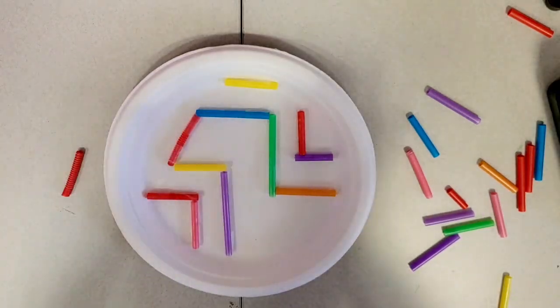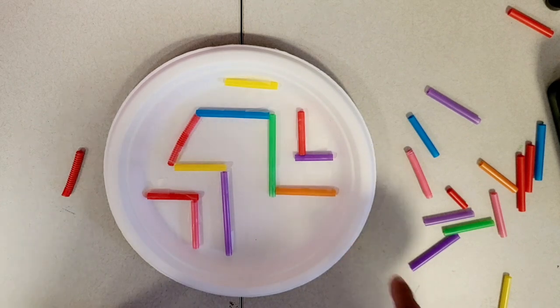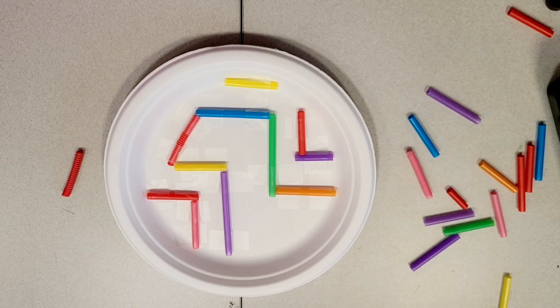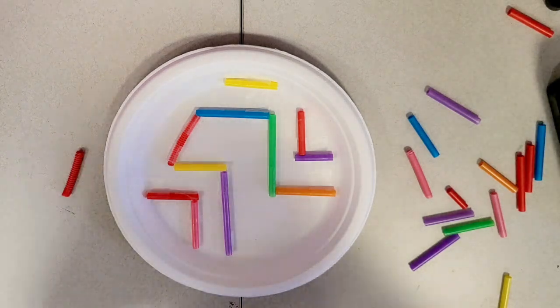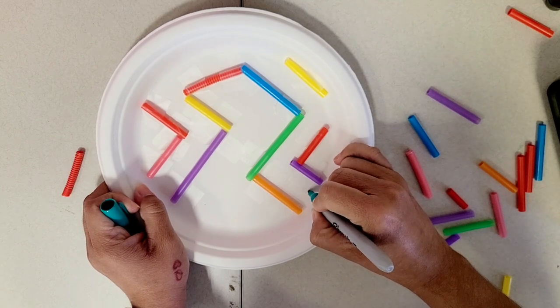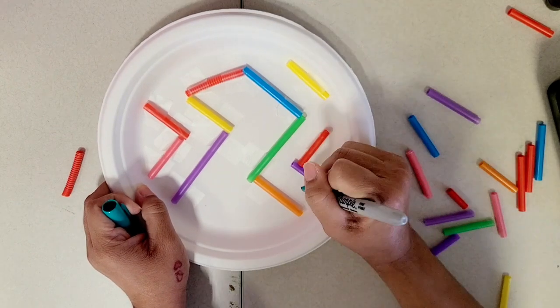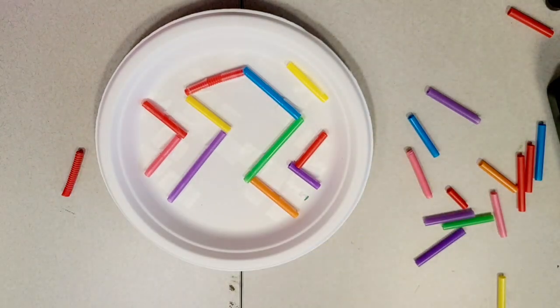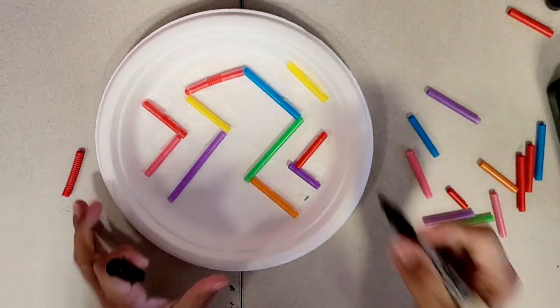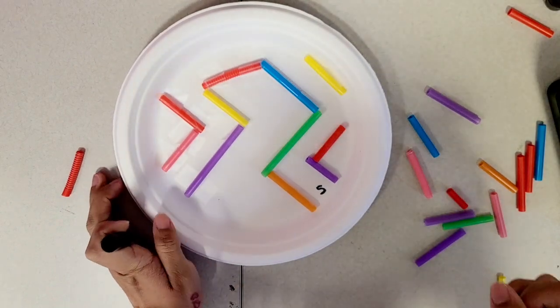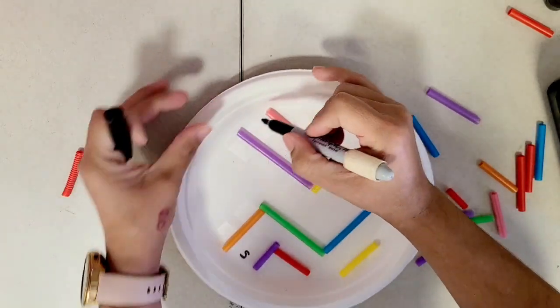Okay so I have the designated path that I want my marble to go and I'm going to label that so that I know and don't get confused later on when I add more straws to it. This is going to be my start. I'm going to label it, I'm going to label it a start. Let me grab a black marker. I'm going to label this my starting point and then my end point is going to be right here.